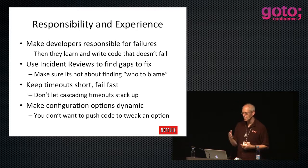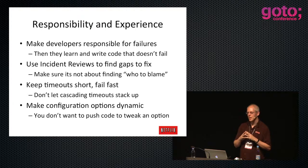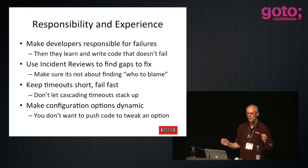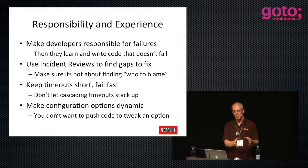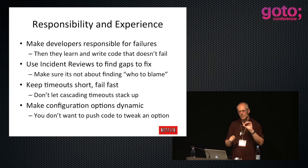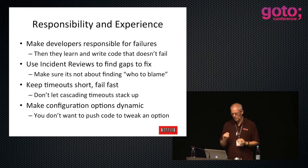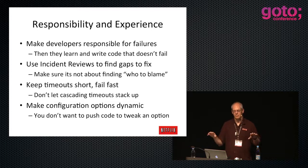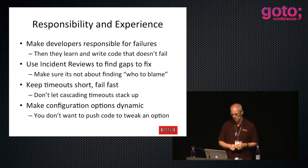Make all your configuration options dynamic. You don't want to have to push code to tweak a service timeout or turn off a feature. We built and open sourced a hierarchical dynamic configuration system called Archaius. This gives us the ability to apply override configuration at any level of granularity - I can do a global override everywhere, or to one instance in one zone, or all instances in zone A, or all instances in Europe. It's got a hierarchy of overrides and defaults, backed by a Cassandra cluster that runs across all zones.